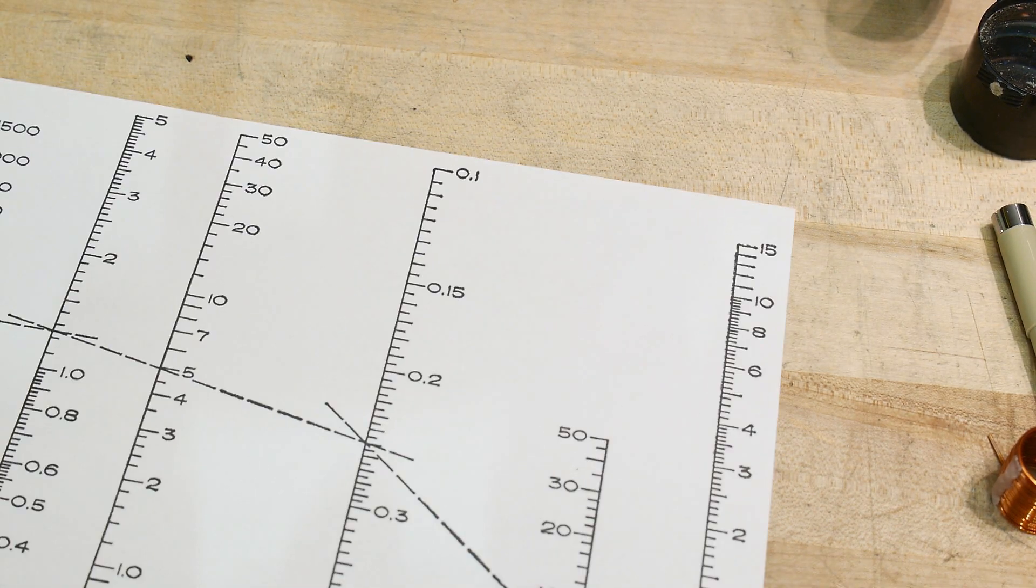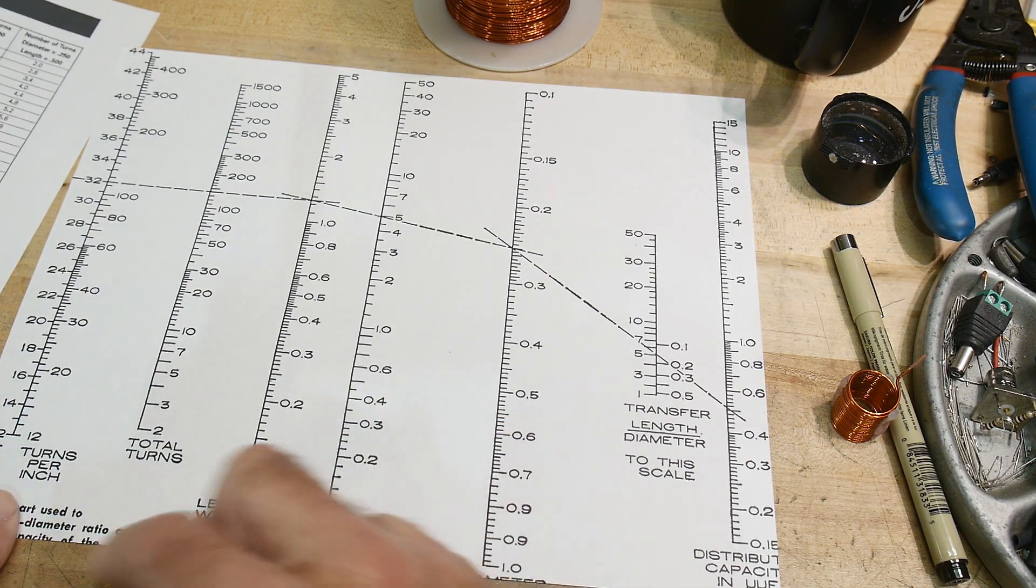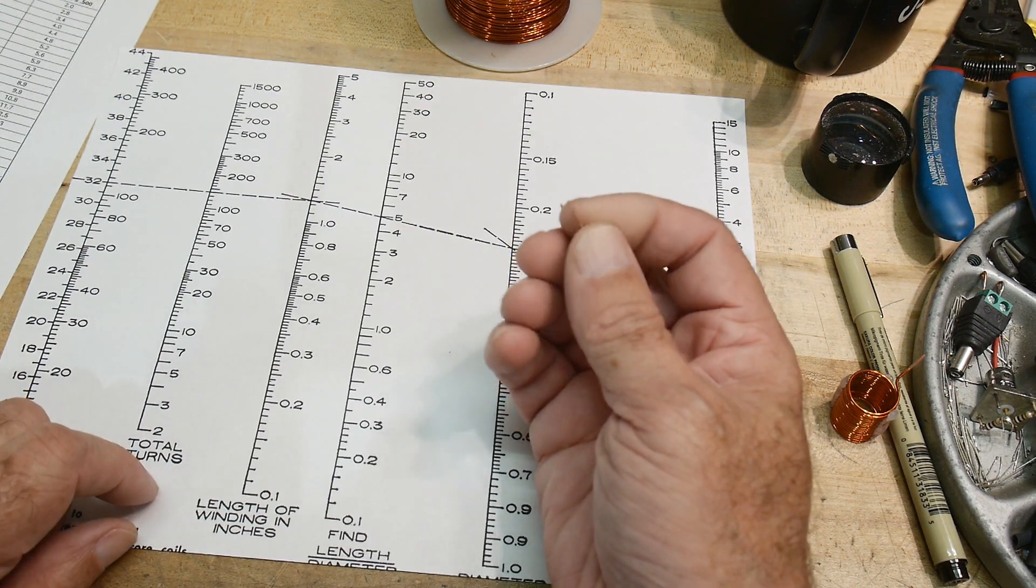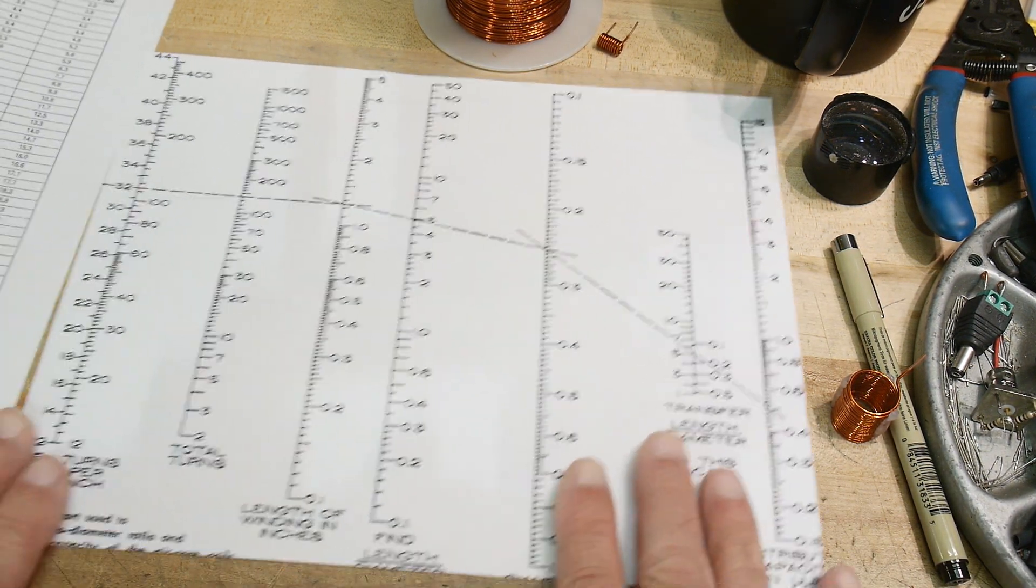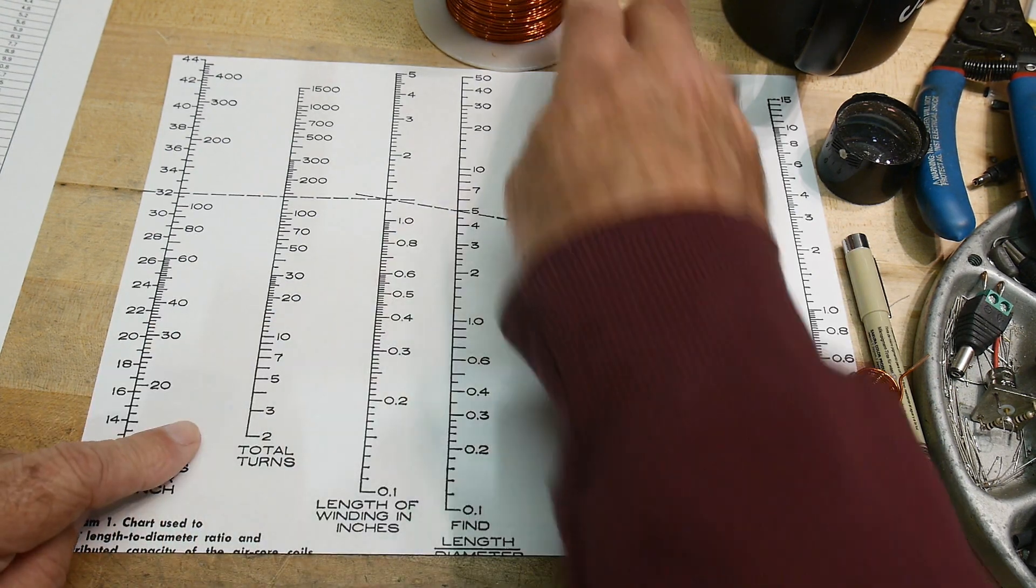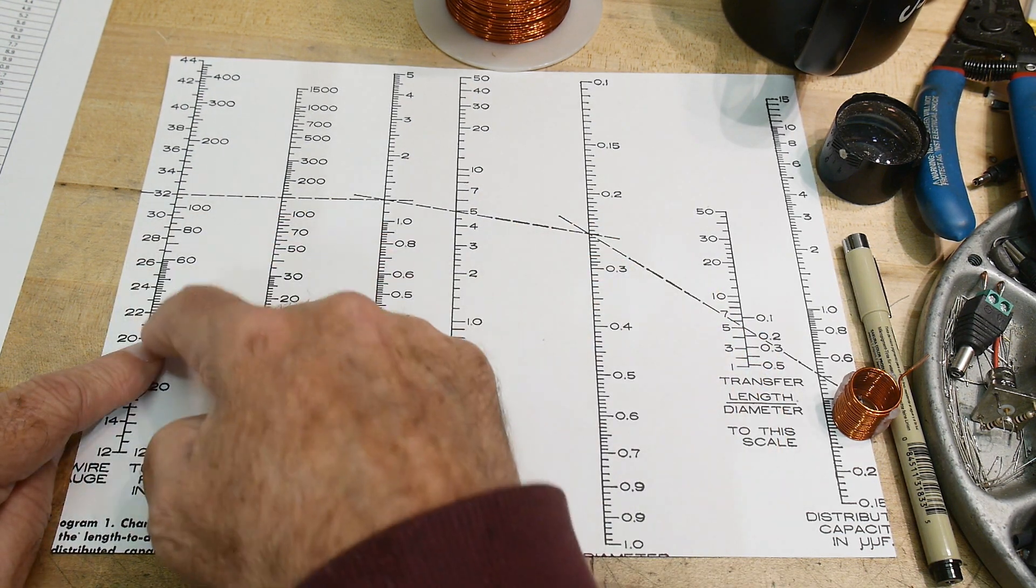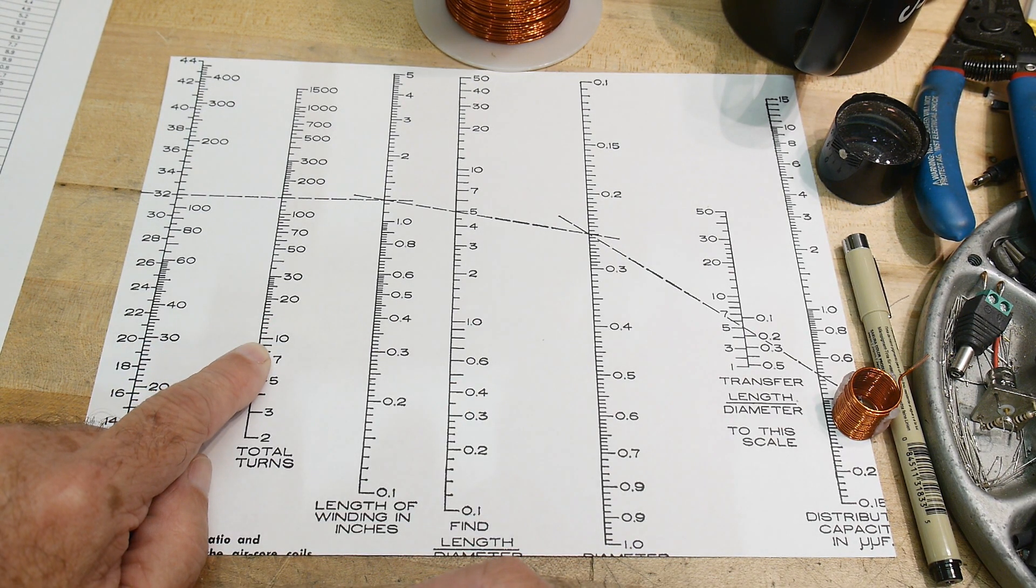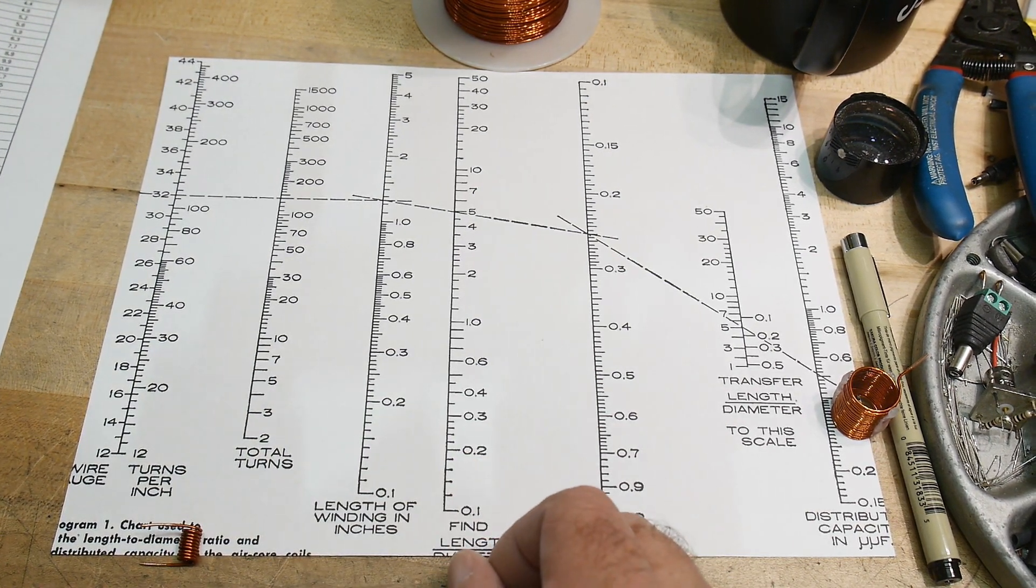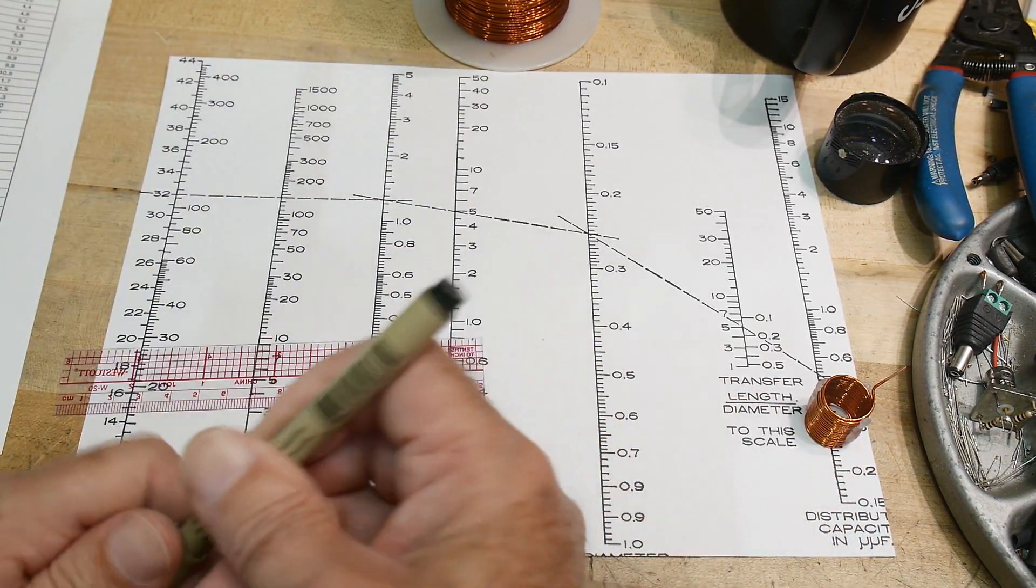All right, so let's take a look at maybe another way to determine how to wind these things. There are these weird things which I have to say I haven't used. It tells you for a particular gauge wire. So this is about a 19 or 20 gauge wire. So let's say it's 20 gauge, so here's 20 gauge. It tells you that if you wind it so they're all touching, you will end up with 30 turns per inch. So that's all this does. It just tells you that you're here about 30 turns per inch.